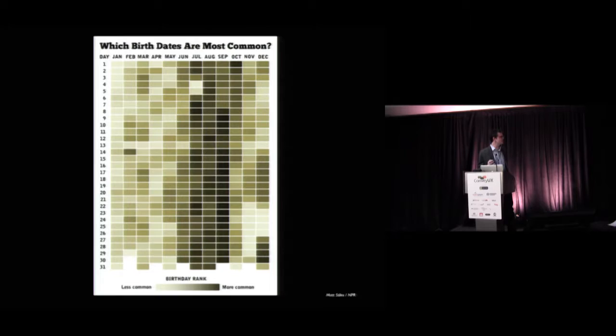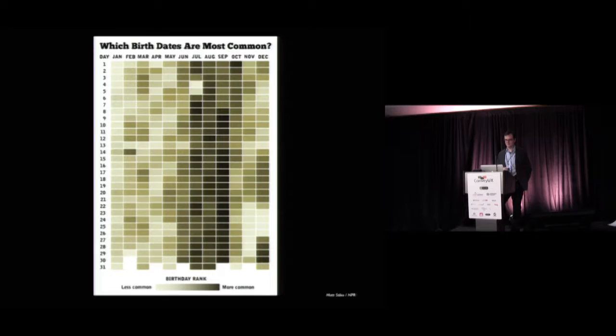If you take all Americans and see when people are born — across the top you'll see the months, down the side the numbers of the day, and then the darkness indicates how common that birthday is.